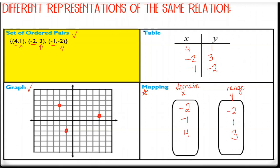Now notice that with the table, everything was paired up. With the mapping, it's not necessarily in order — we draw arrows to show what goes together. So four went with one, so we draw an arrow from four to one. Negative two went with three, so we draw an arrow from negative two to three. And negative one went to negative two. That is how we show all four methods.